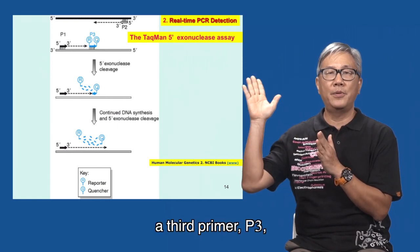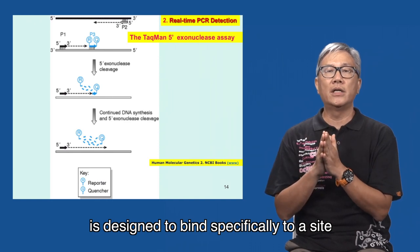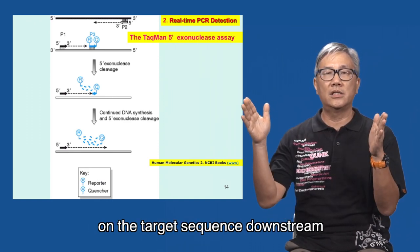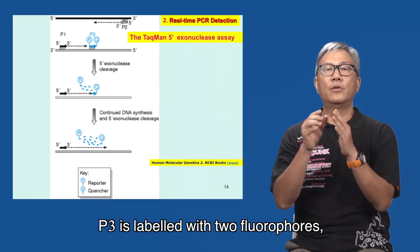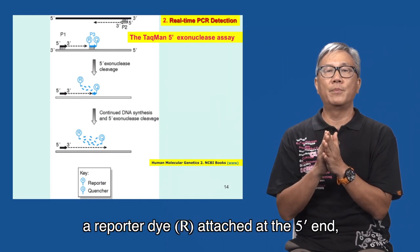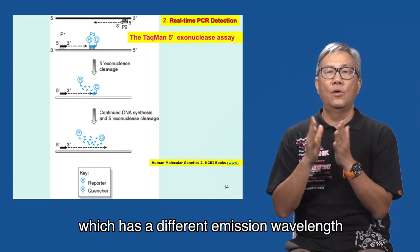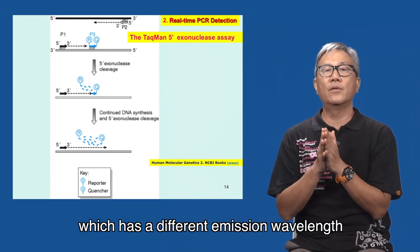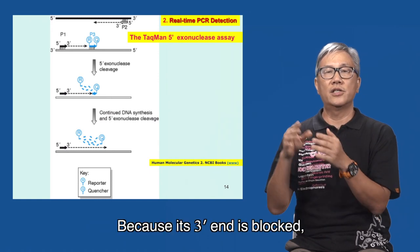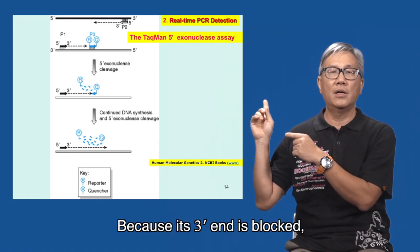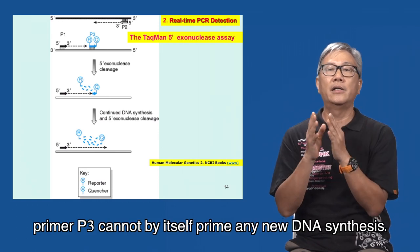A third primer, P3, is designed to bind specifically to a site on the target gene sequence downstream of the P1 binding site. P3 is labeled with two fluorophores, a reporter dye attached at the 5 prime end and a quencher dye which has a different emission wavelength than the reporter dye attached at its 3 prime end. Because its 3 prime end is blocked, primer P3 cannot by itself prime any DNA synthesis.